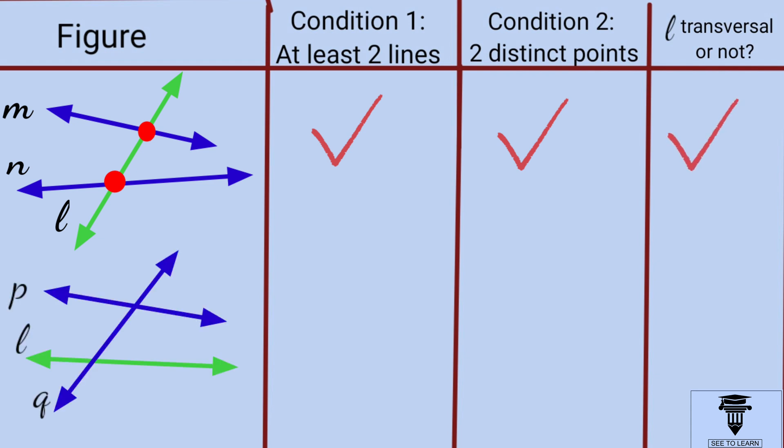Now, look at the similar figure. Is L the transversal in this case too? No, because it does not cut two lines. Here, Q is the transversal.